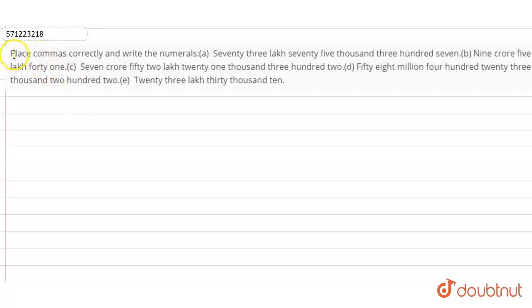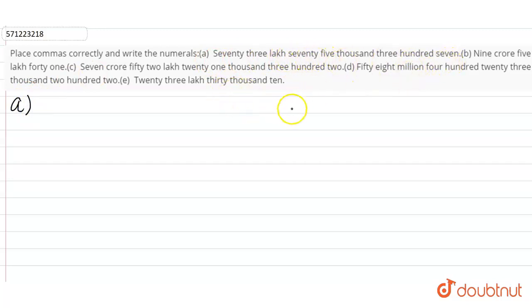Hi students, the question is: place commas correctly and write the numerals for 5 parts. So one by one we will solve each part.